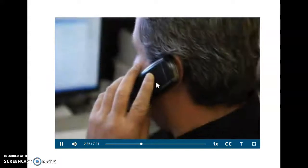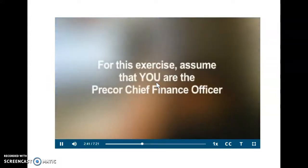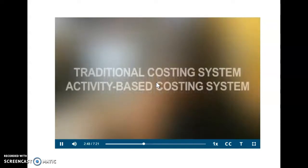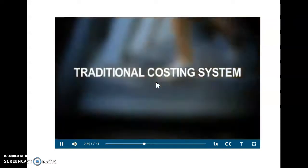Rick recently took an order for 140 elliptical trainers for a corporate client. Let's take a look at this order from both a traditional costing and an activity-based costing standpoint to see which method is best suited for a company like Precor. We'll take a look at traditional costing first.